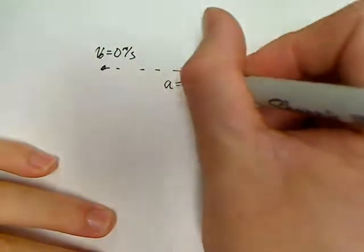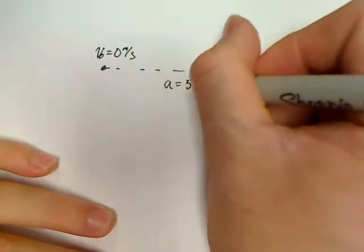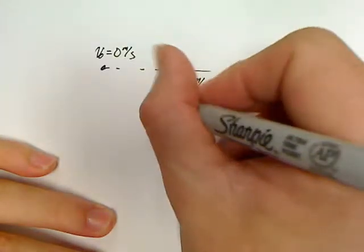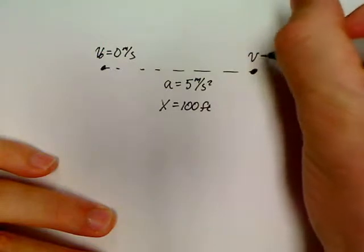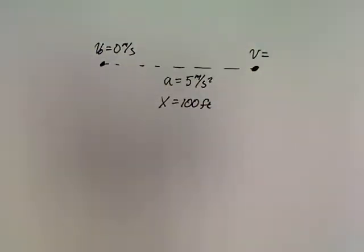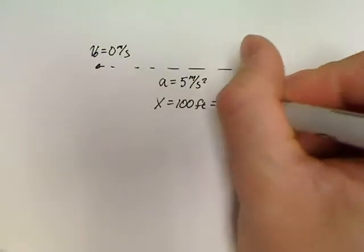It accelerates at 5 meters per second squared. It does that over a distance of 100 feet. What is its velocity at the end? Now, the only thing that we have to do is that 100 feet has to be changed to meters. So, that's 30.5 meters.